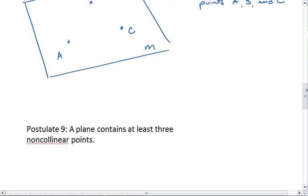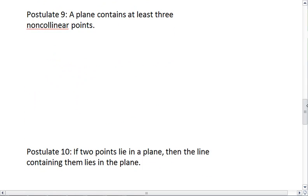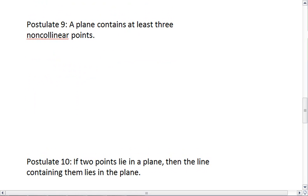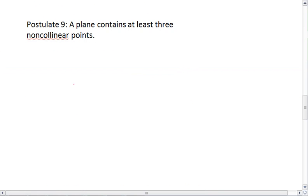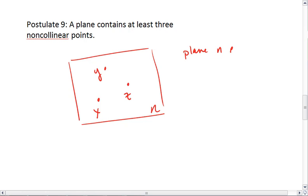This brings us to postulate 9, which is similar to postulate 8, they go together. Postulate 9 tells me that given any plane, a plane will contain at least three non-collinear points. So plane N contains points X, Y, and Z.